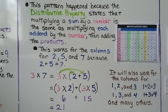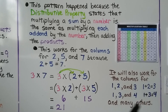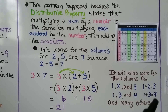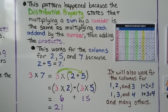This also works for the columns for 1, 2, and 3 because 1 plus 2 equals 3. It works for 1, 3, and 4 because 1 plus 3 equals 4, and many others. We could do the columns for 3, 4, and 7 because 3 plus 4 equals 7. That's the distributive property — and that is a pattern on the multiplication table.